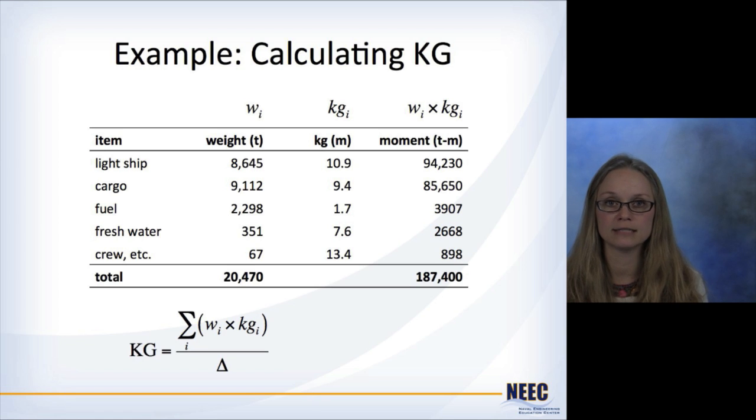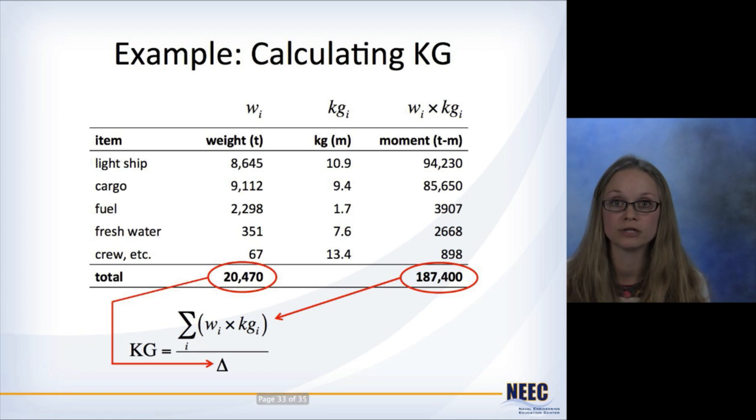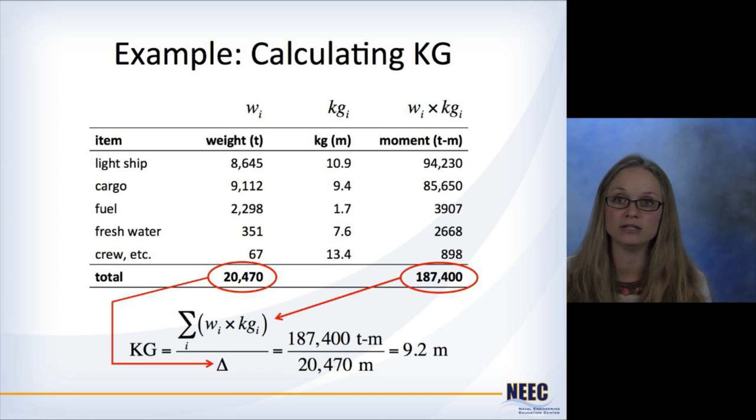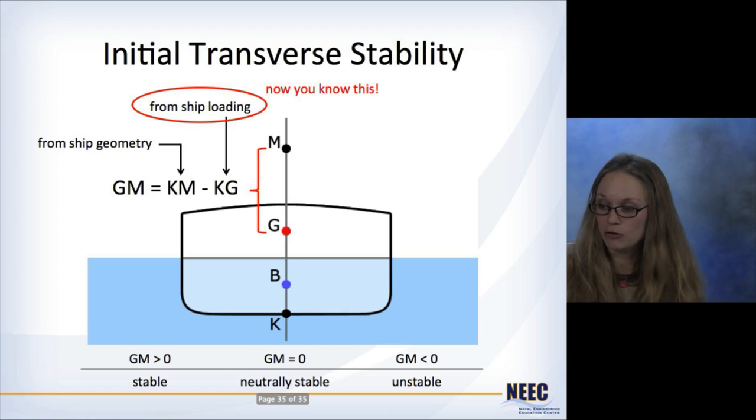So going back to our equation, KG is equal to sum of the moments divided by the weights. So we now have these numbers. You plug in these numbers, and then you get the total KG is 9.2 meters. So again, now you know KG, so now you can go back and complete your stability analysis. That's really all there is to it.